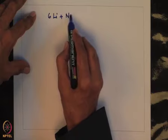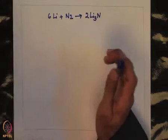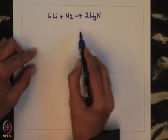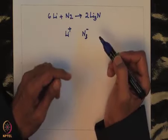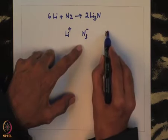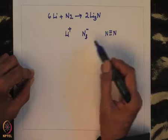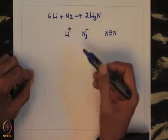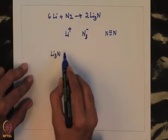Lithium reacts with nitrogen to form lithium nitride (Li₃N). This salt is highly stable because of the very high lattice energy arising from the small Li⁺ and highly charged N³⁻ ions. The N³⁻ ion is formed by breaking a very strong N≡N triple bond with an energy of about 941 kJ/mol, but the combination of these two small, highly charged ions provides sufficient energy. Lithium nitride is also highly reactive and readily undergoes hydrolysis on exposure to moisture, forming lithium hydroxide and ammonia.